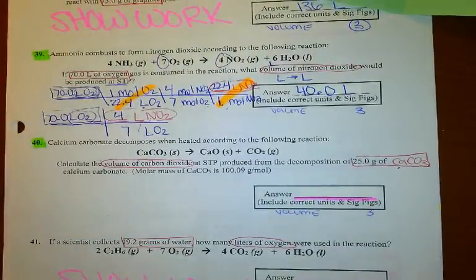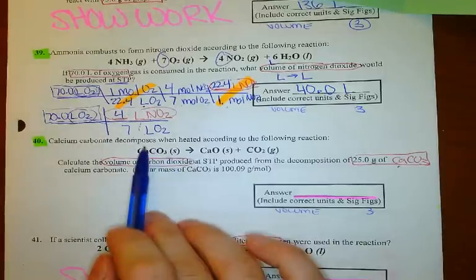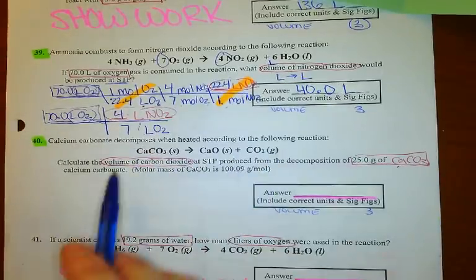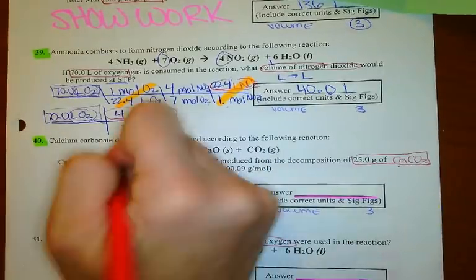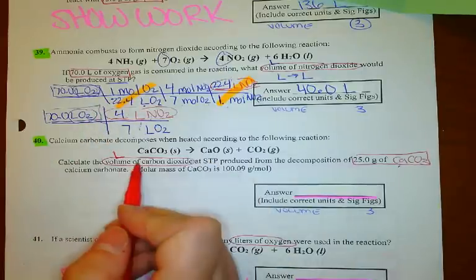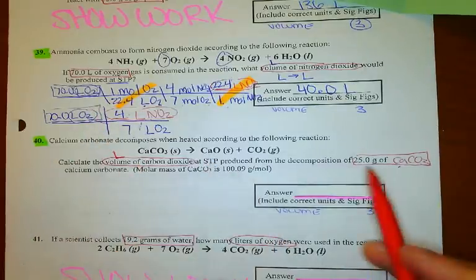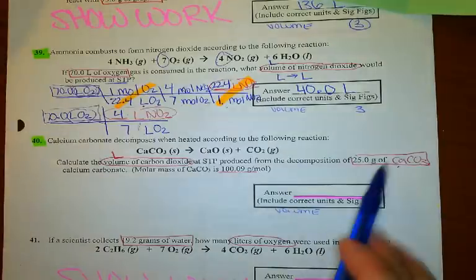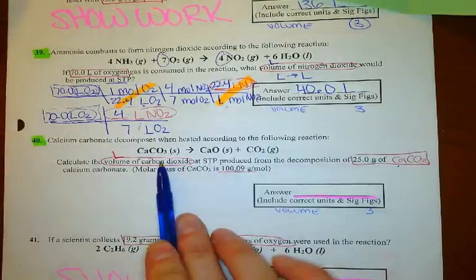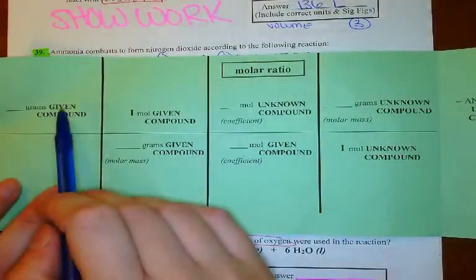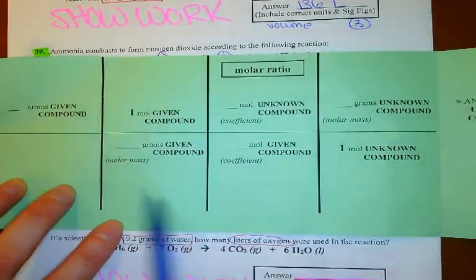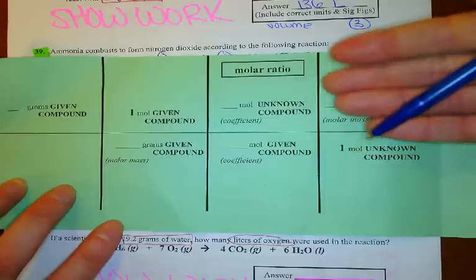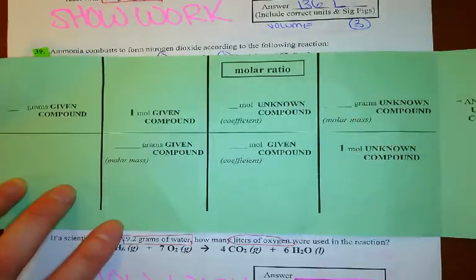Number 40: calcium carbonate decomposes — one reactant to two products — when heated according to the following reaction. Calculate the volume at STP produced from a decomposition of 25.0 grams of calcium carbonate. They even tell you the molar mass of calcium carbonate, which is helpful. So going from grams (my given) to liters — we have to do the full three steps, starting in grams.